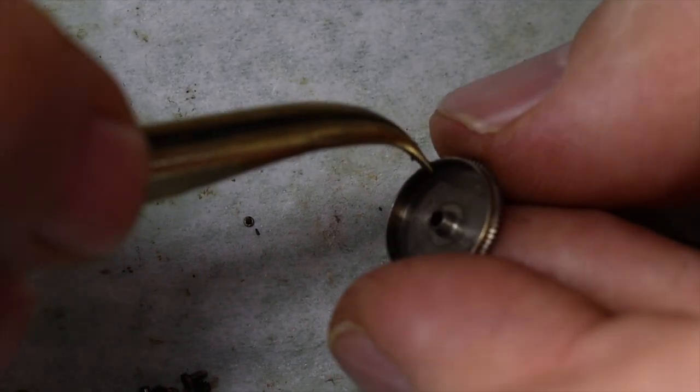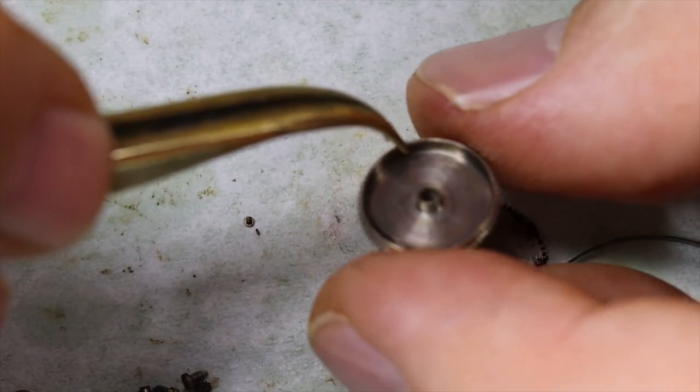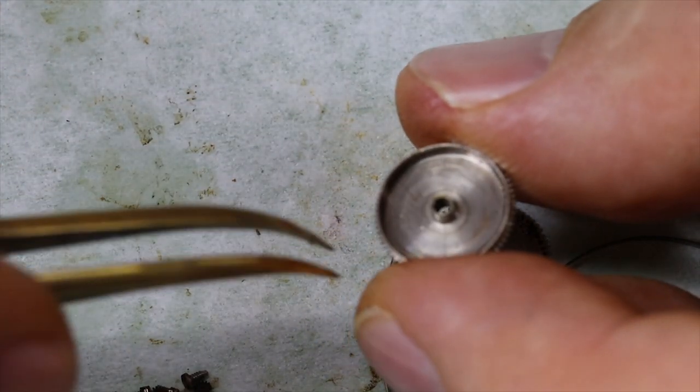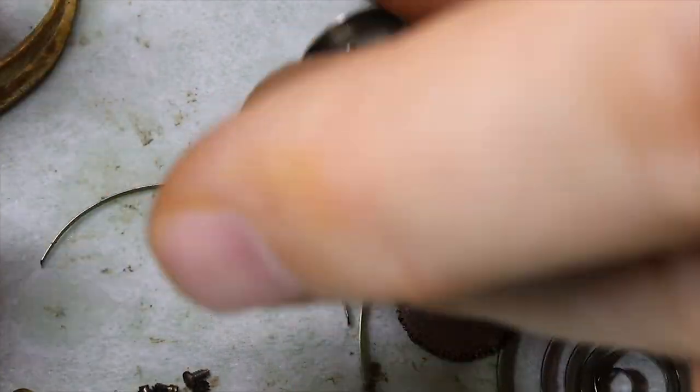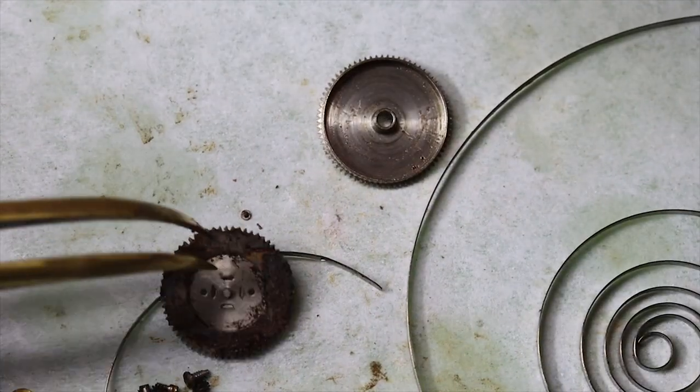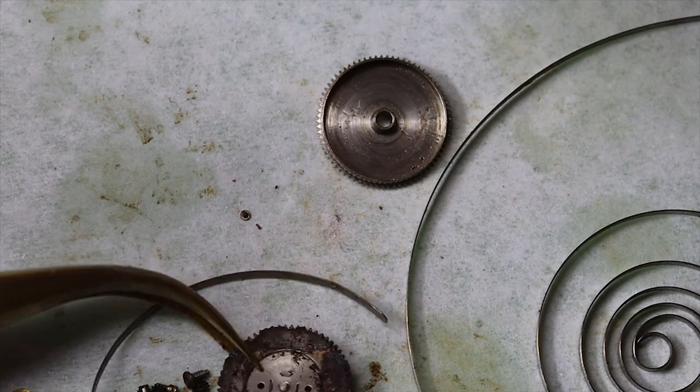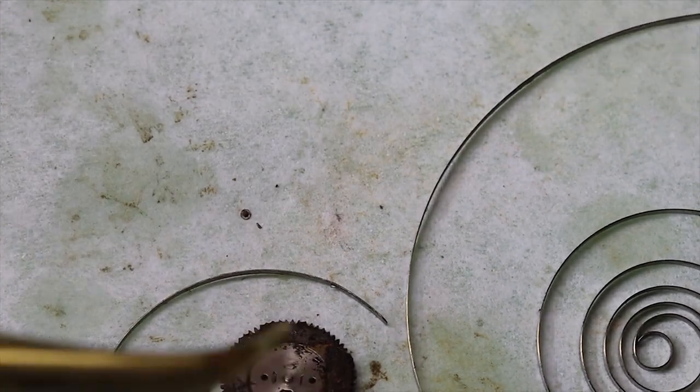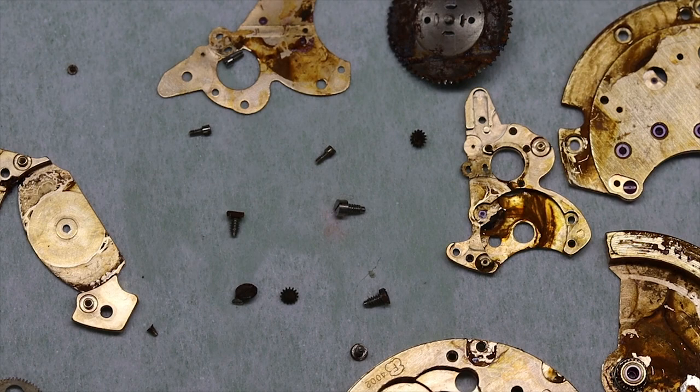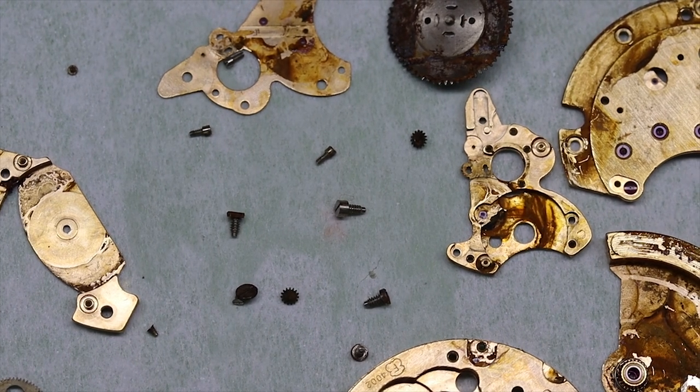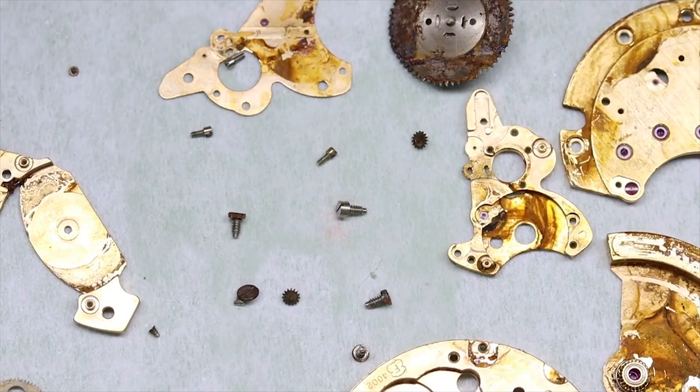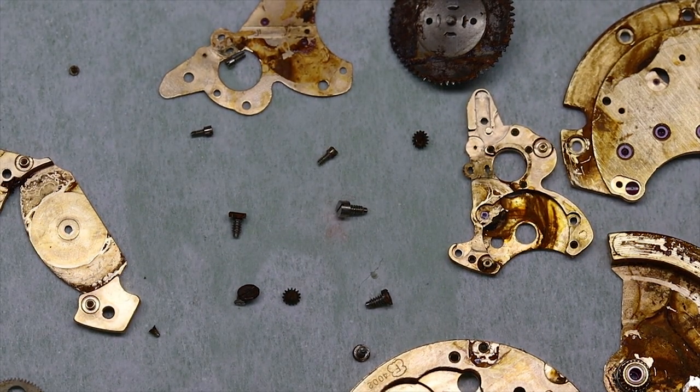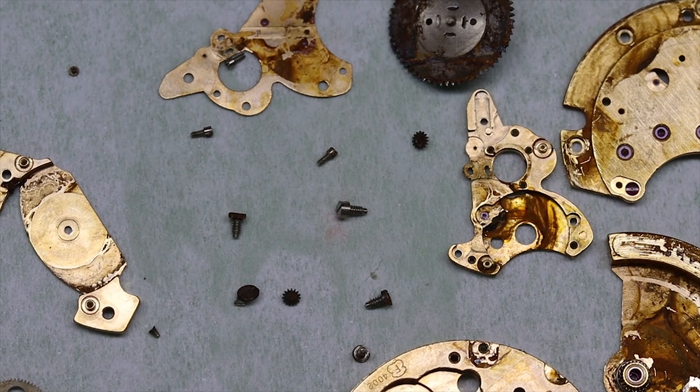But the spring actually does have some power in it still. Now the eagle-eyed observer might have seen that the mainspring is a non-automatic mainspring. And this is the reason: this is a separate brake spring that is coiled inside the barrel and brakes against the barrel wall. So if you want to replace the mainspring in this kind of barrel, you can either put in a new automatic mainspring or you can use this brake spring together with a new manual winding mainspring.